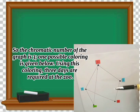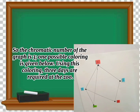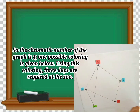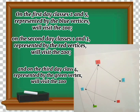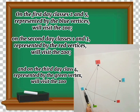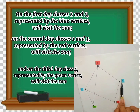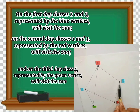One possible coloring is given. Using this coloring, three days are required at the zoo. We have found the answer to the question of how many days will be required. Three days will be required at the zoo to feed all the animals that the classes want to feed. On the first day, classes two and five — represented by the blue vertices — will visit the zoo.